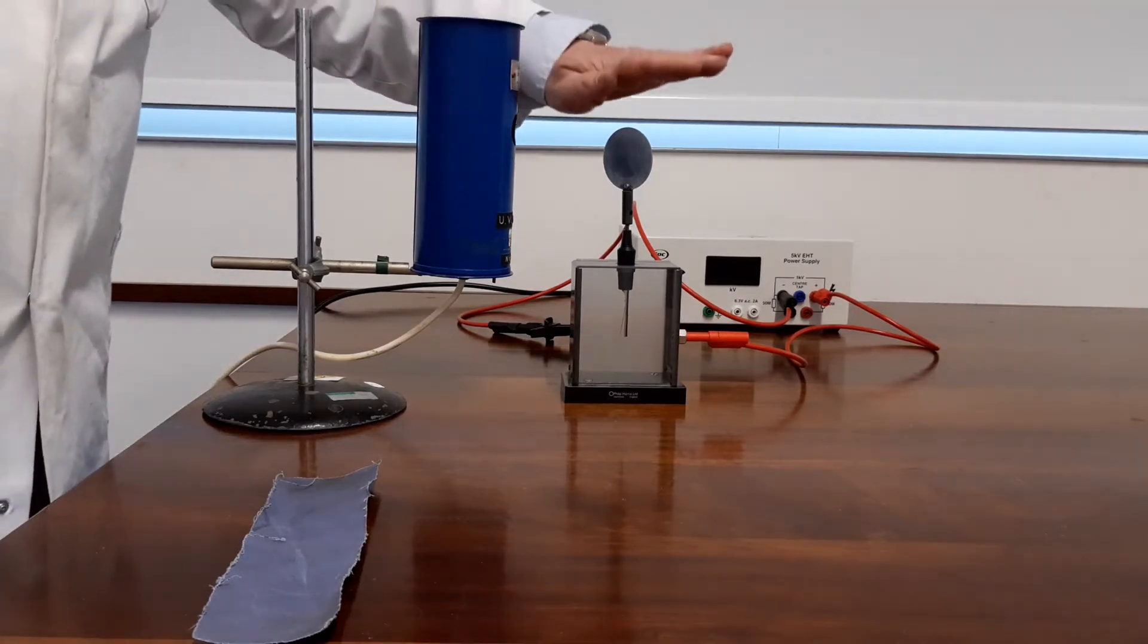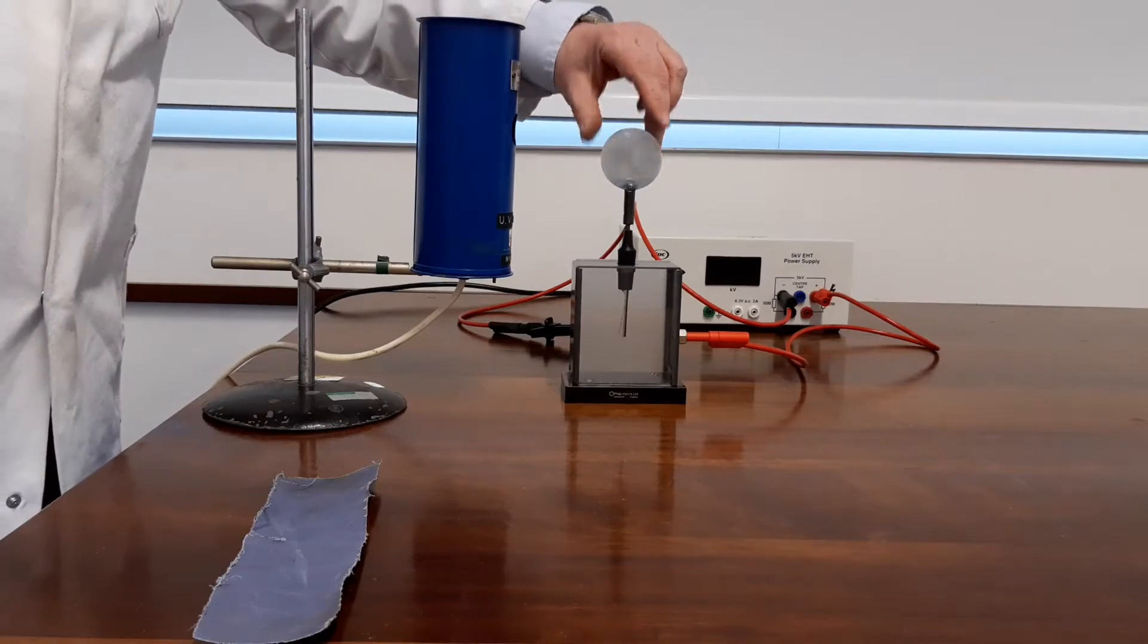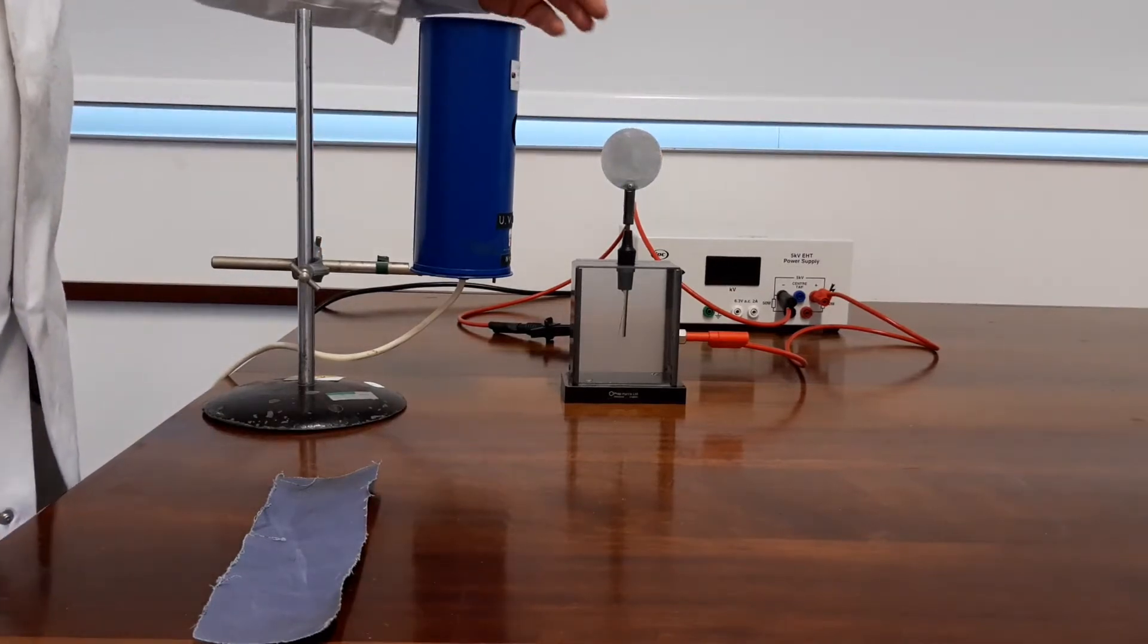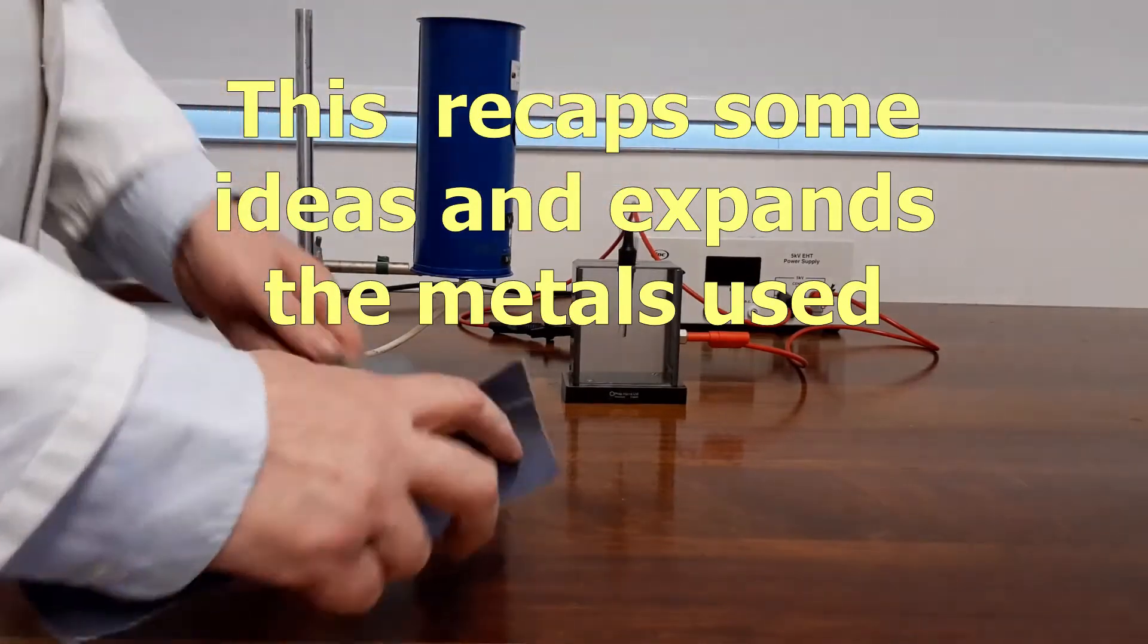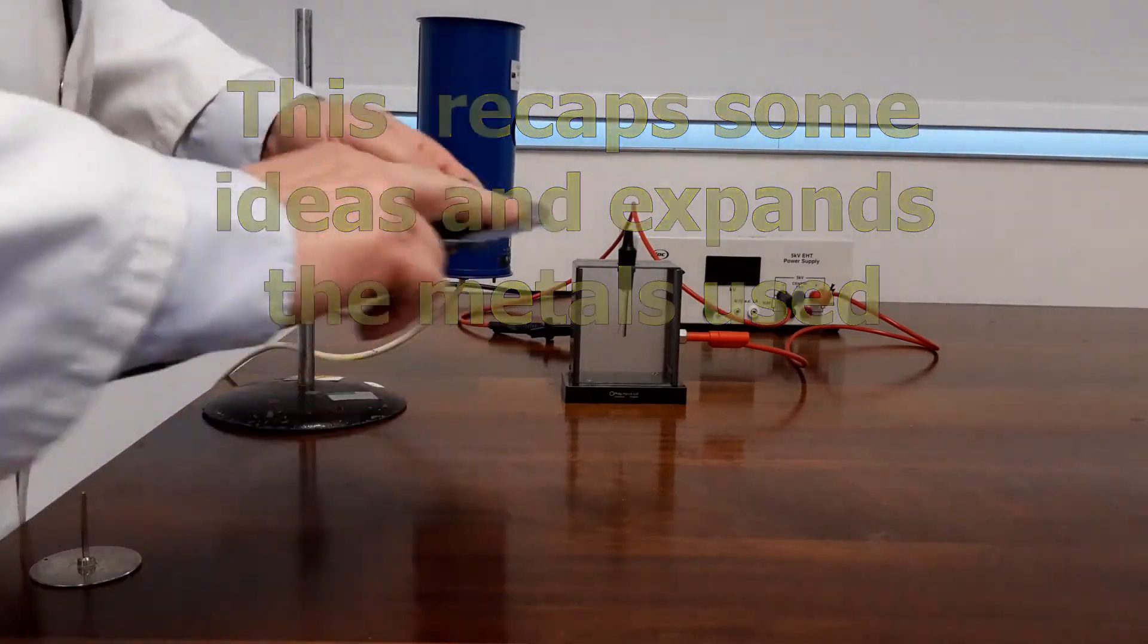I've got here a gold leaf electroscope with a zinc electrode which I clean using some emery paper.